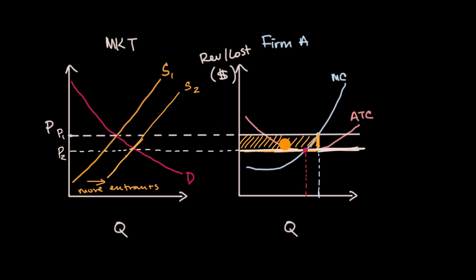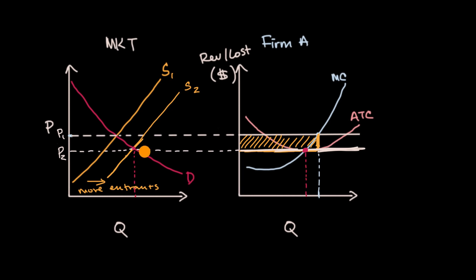So we see that even where there is economic profit in the short run, in the long run entrants go into that market and reduce the economic profit down to zero. At that point, the firm with zero economic profit is productively efficient — producing at the minimum point of their average total cost curve. This equilibrium point in our market is also allocatively efficient: our marginal benefit equals our marginal cost at that equilibrium price and quantity, with no deadweight loss.